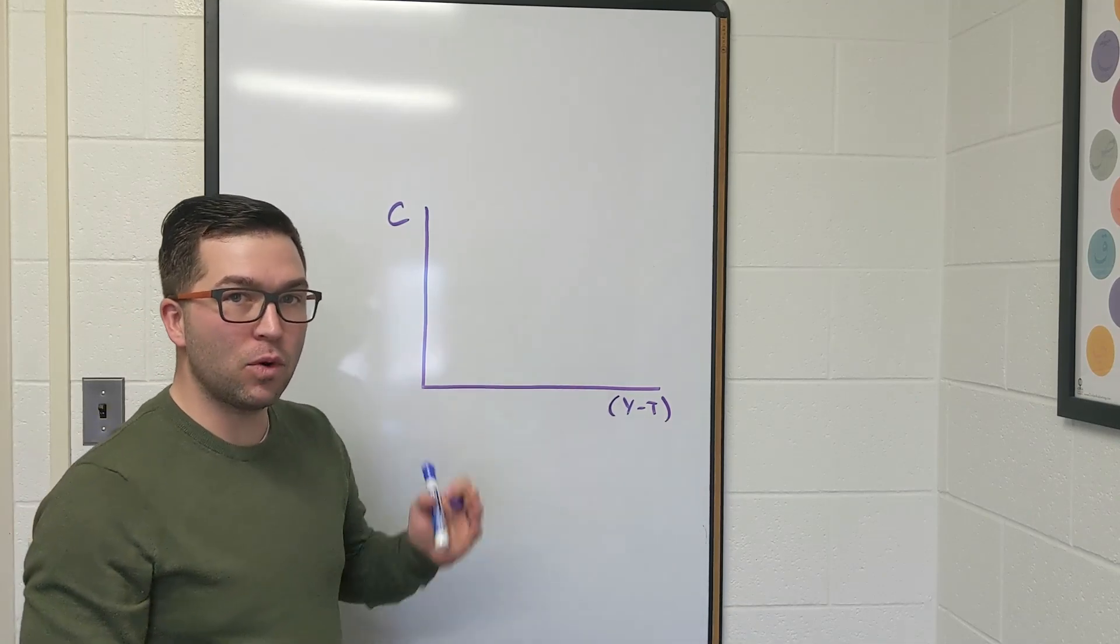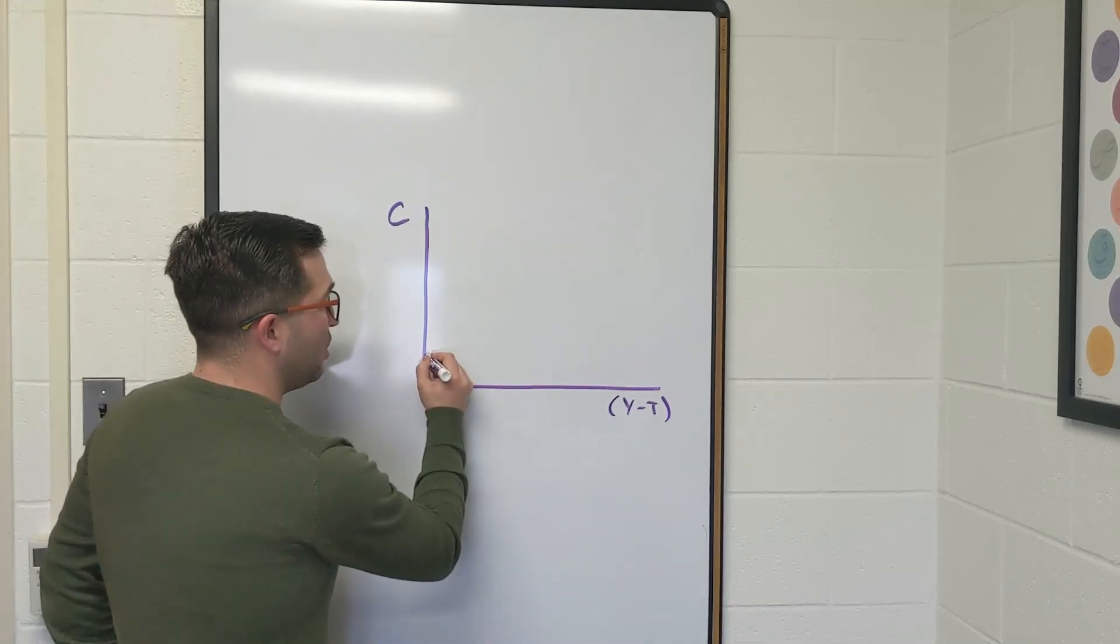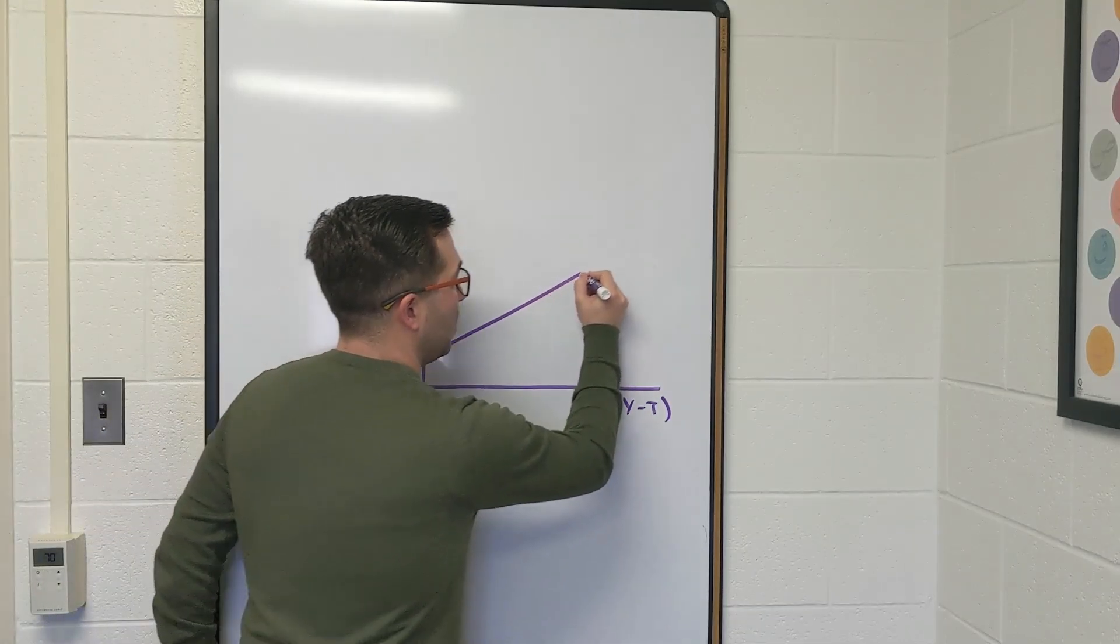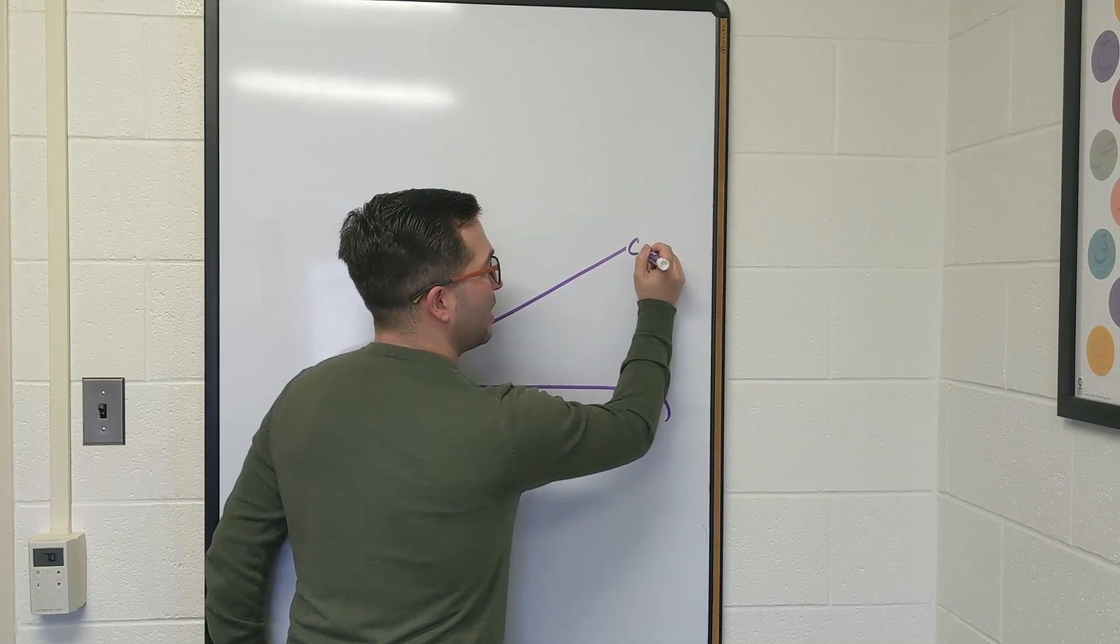And what we know is that there's an upward slope and it's also not going to start at zero. So the consumption function is going to be modeled like this.